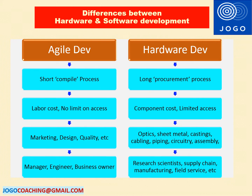The second difference between hardware and software development is related to component cost. Software development is almost all labor cost — we can give access to many people for software programs with less cost. It's not expensive to give everyone full access to the latest version of software for testing. But in hardware development, it costs a lot to give access to the latest hardware and it takes longer time to deliver those units.